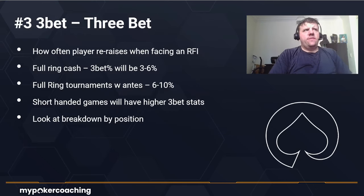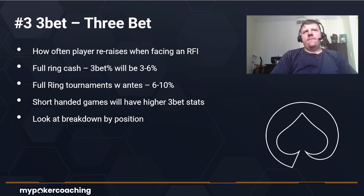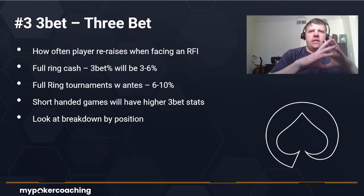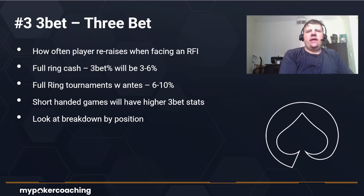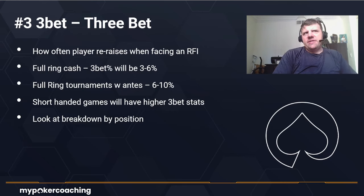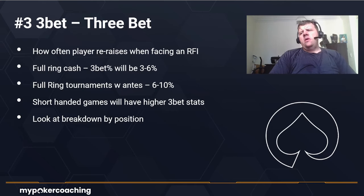Stat number three is three-bet — how often a player re-raises when facing an RFI. This stat is based on opportunities: it counts only the times when someone has raised first in front of you. These numbers depend on format. In full-ring cash games with no antes, your three-bet percentage might be between 3 and 6 percent. In tournaments with antes and smaller raise sizes, 6 to 10 percent is more standard. Shorthanded games will have much higher three-bet stats.